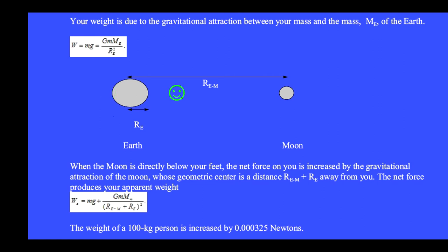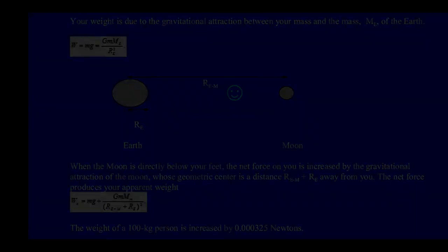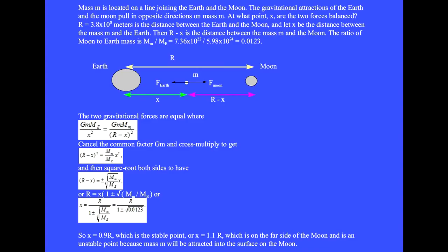If you move toward the Moon, you would reach a point at which the gravitational force of the Earth is balanced by the gravitational force of the Moon on you. The two gravitational forces are balanced when the mass is a distance x away from the Earth and a distance R minus x away from the Moon. The two gravitational forces are equal at the point x where G times little m times the mass of the Earth over x squared equals G times little m times the mass of the Moon over (R minus x) squared.